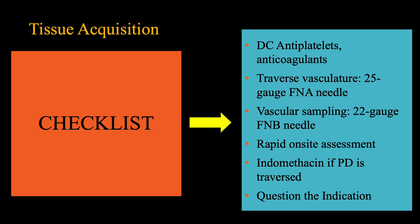An FNA and not FNB needle should be used, preferably 25 gauge in size. When sampling a suspected tumor thrombus within the vasculature, a 22 gauge FNB needle can be used, ensuring that only the thick wall of the vessel is sampled. This is one of those occasions where access to rapid on-site assessment is invaluable, so that the number of needle passes can be minimized.